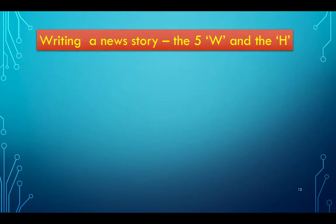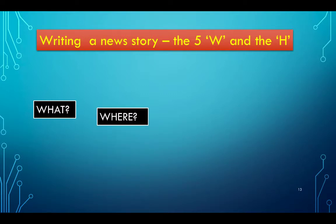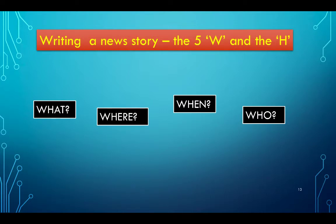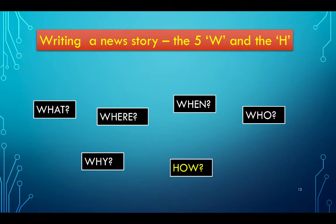So if we were to write a news story, what should guide us? There are five W's and one H. We need to say: What are we talking about? Where is the story happening? When — we need to give it a timestamp. Who was involved — this is very important because news has to be about people. Why — the people need to know why this has happened. And How — give the details of how the story has unfolded.